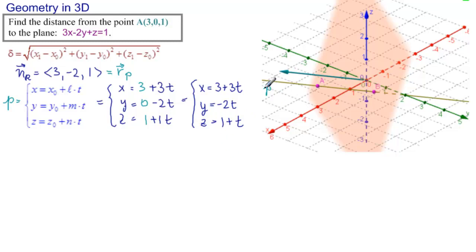Now we have the equation of P and the equation of the plane. How do we find their intersection, which is exactly that point B? Well, we can substitute x, y, and z into the equation of the plane, and we will have an equation in the one variable t.